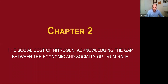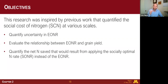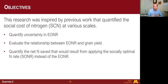Moving on to chapter two, 'The Social Cost of Nitrogen: Acknowledging the Gap Between the Economic and Socially Optimum Rate.' This research was inspired by previous work that quantified the social cost of nitrogen at various scales. I wanted to take that from an agronomic perspective, examining the variability from field to field and year to year in Minnesota. The objectives were: first, quantify the uncertainty around the EONR; second, evaluate the relationship between EONR and grain yield; and third, quantify the net nitrogen saved by applying the socially optimum nitrogen rate instead of the economic optimum.